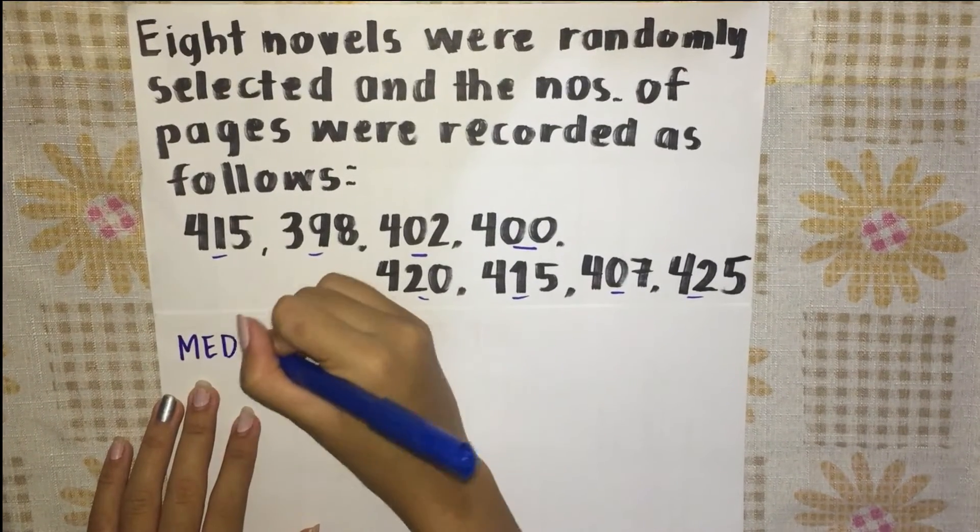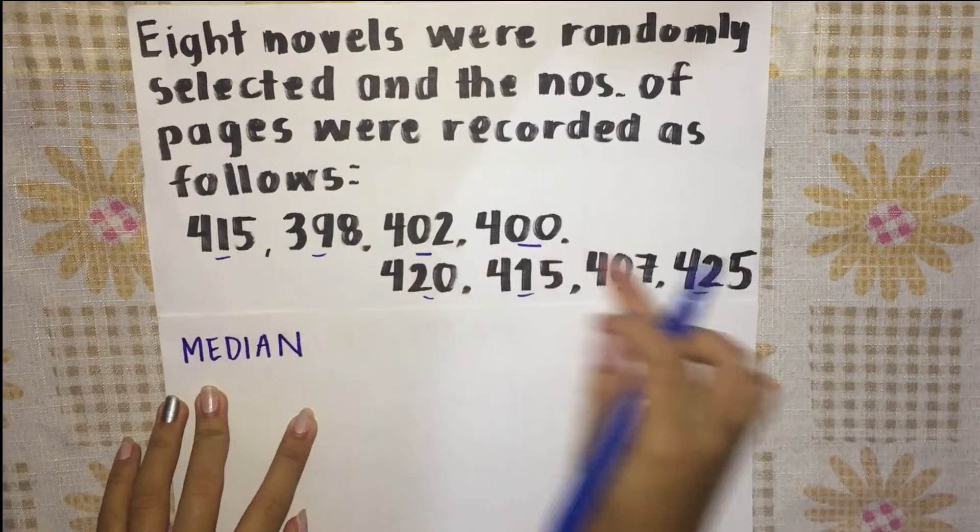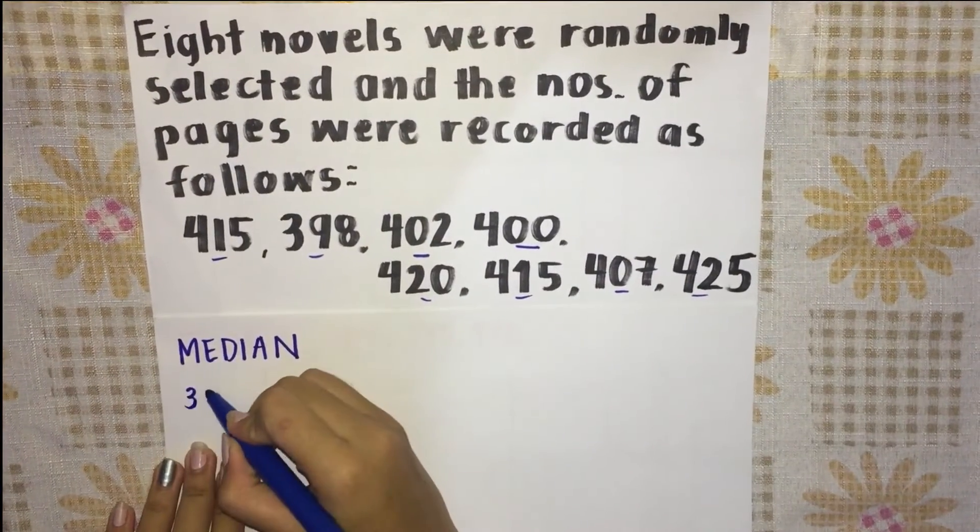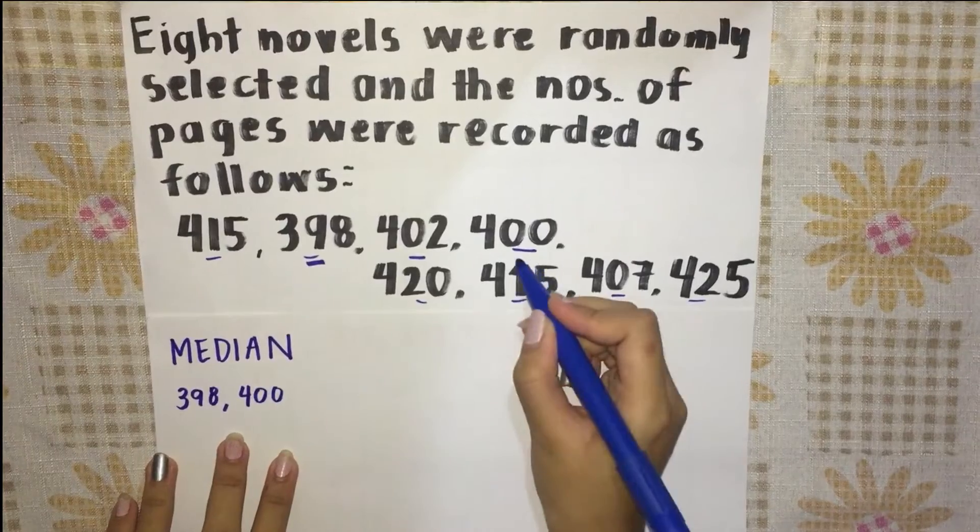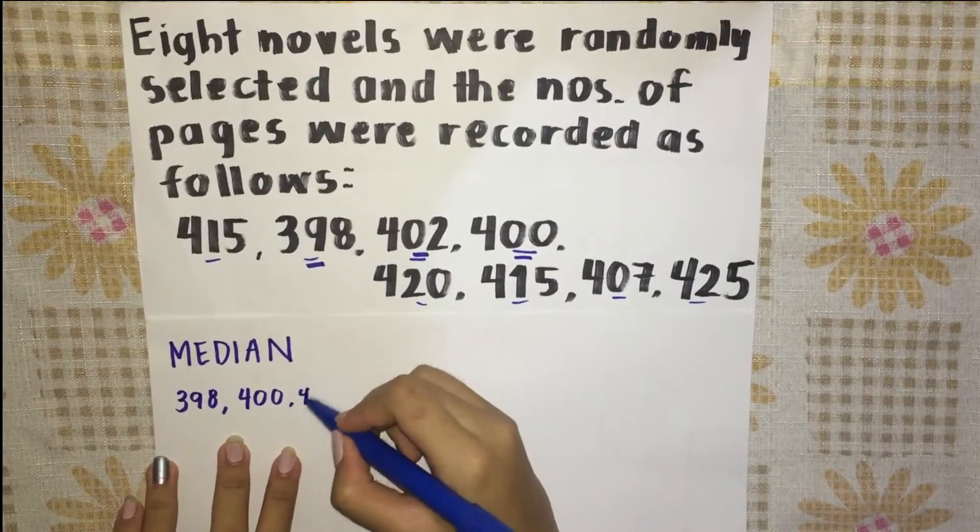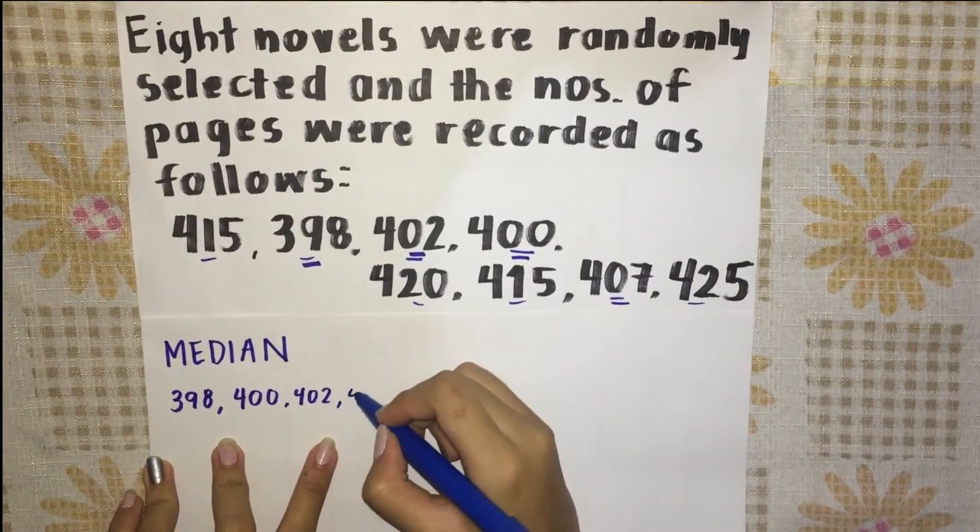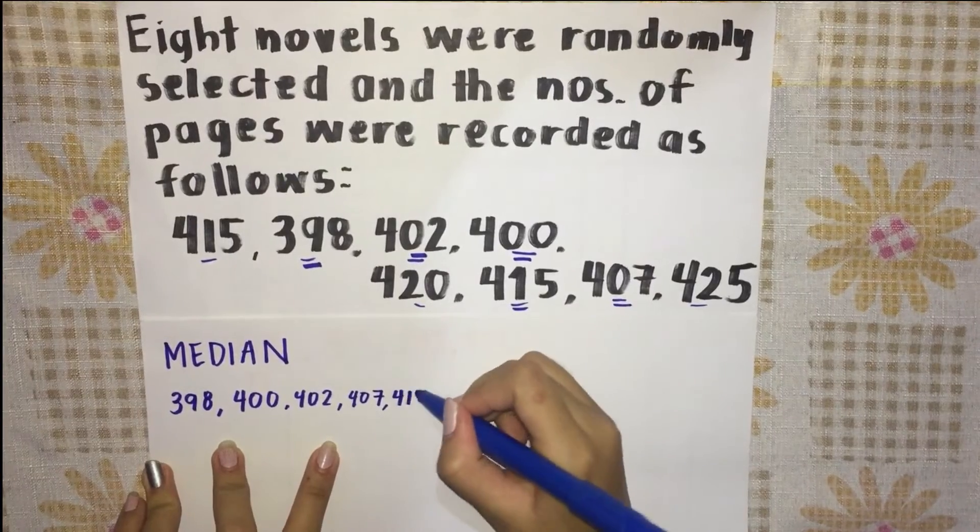To find the median, arrange all the data in ascending order. The order would be as follows: 398, 400, 402, 407, 415, 415, 420, and 425.